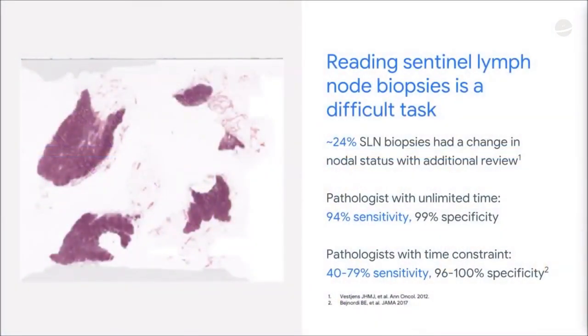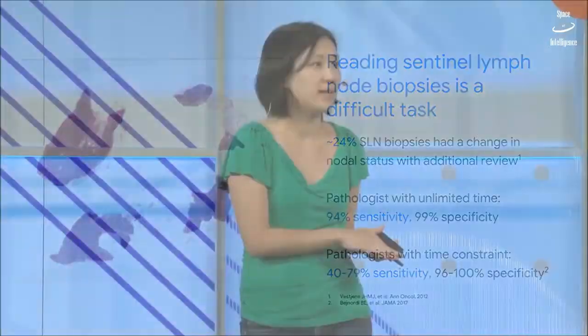Reading these lymph nodes is actually not an easy task. About 20 to 24% of biopsies, when they went back to look at them, had a change in nodal status — meaning if it was positive it was read as negative, and if it was negative it was read as positive. That's a really big deal: it's one in four.